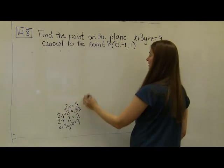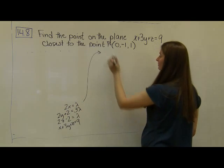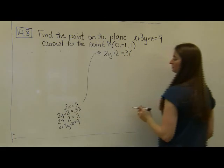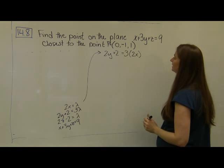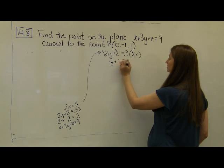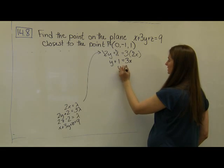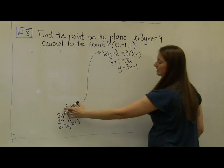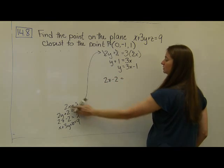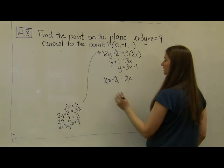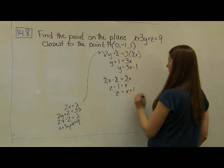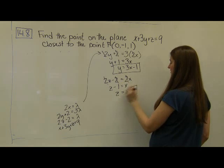Solving the system: since 2x equals lambda, I substitute into the y equation: 2y plus 2 equals 3 times 2x. Dividing by 2 gives y plus 1 equals 3x, so y equals 3x minus 1. Next, substituting lambda into the z equation: 2z minus 2 equals 2x. Dividing by 2 gives z minus 1 equals x, or z equals x plus 1. So I have y and z both expressed in terms of x.